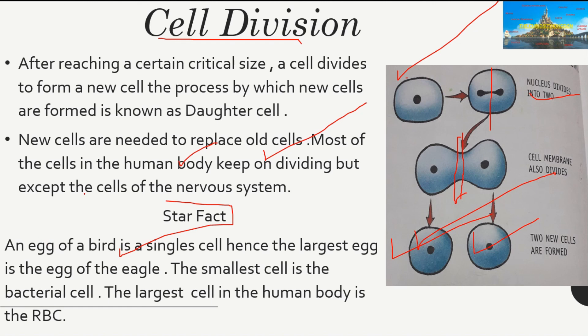Now for some star facts: the egg of a bird is considered a single cell, so the largest cell is the egg of an eagle. Even the egg of a hen that you often consume is just one single cell. The smallest cell is the bacterial cell, and the largest cell in the human body is the red blood cell or RBC. There is also an interesting research factor in RBCs related to the rarest blood types.